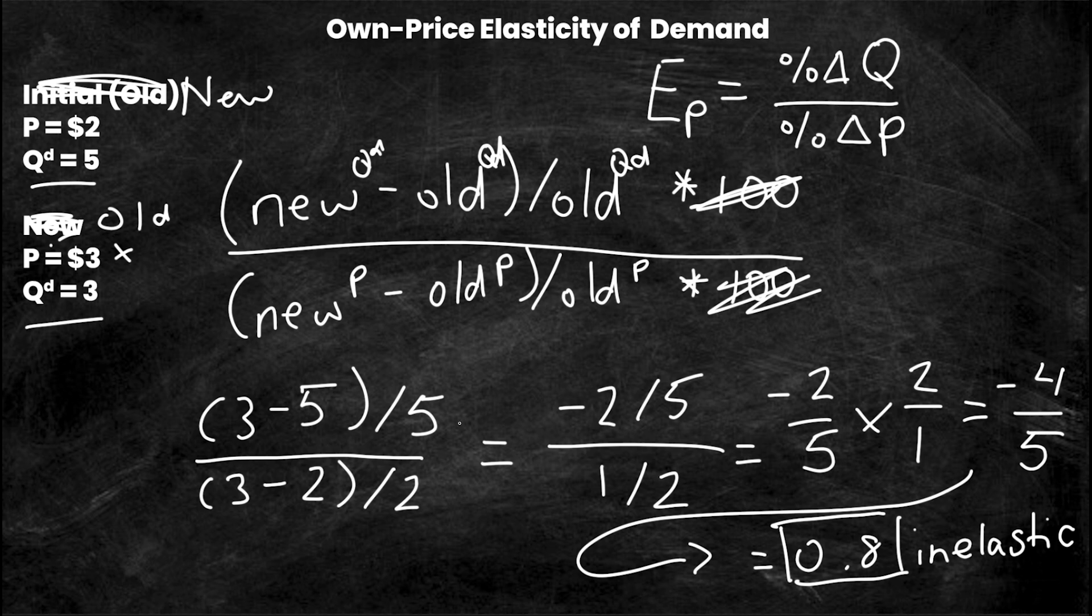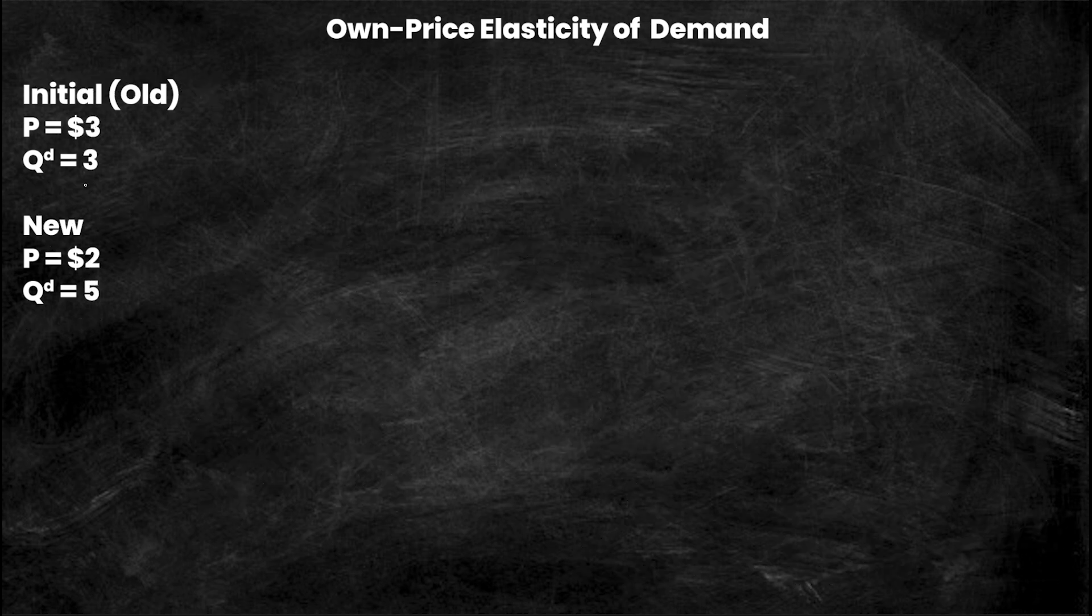Let's go to this next example where I flip the two old and new pricing quantities. Now the initial or old price and quantity are three dollars and three units, and the new are two dollars and five units. So now we see a price go down and a quantity demanded go up. These are the same numbers, but obviously our elasticity and the way we input them into the equation are going to be different.